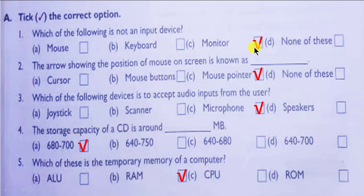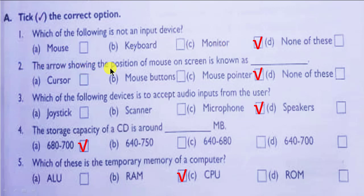The first question is: which of the following is not an input device? Your answer is C — monitor. This is not an input device; it is an example of an output device. Second: the arrow showing the position of the mouse on the screen is known as — answer is C — mouse pointer.